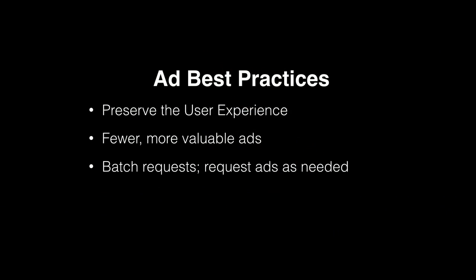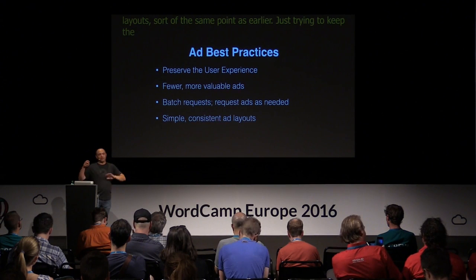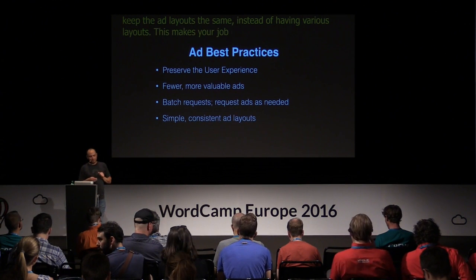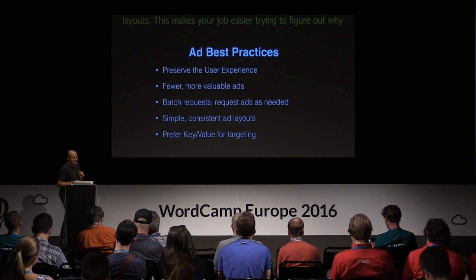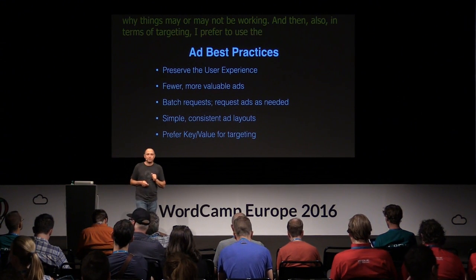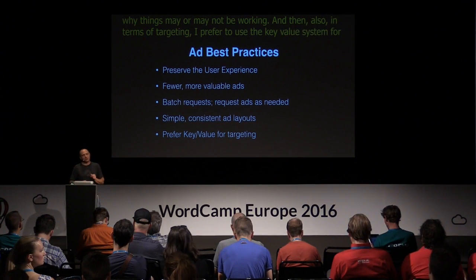I mentioned batch requests — requesting all the ads as quickly as you can, early in the process, so they're all available when you need them. And simple, consistent ad layouts: trying to keep the ad layouts the same instead of having various layouts makes your job easier when figuring out why things may or may not be working. In terms of targeting, I prefer to use the key value system rather than master companion, because of the problems you run into with master companion not working in certain circumstances.